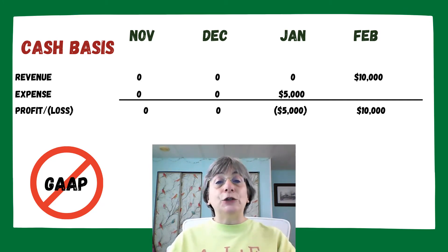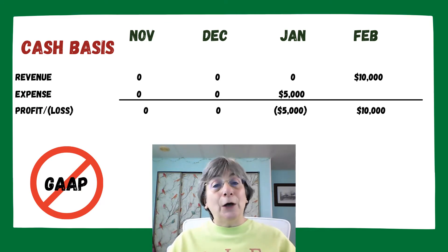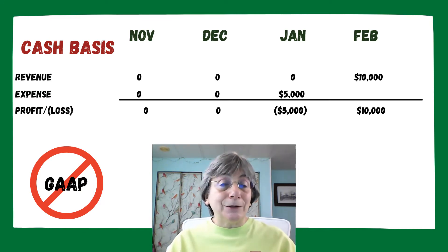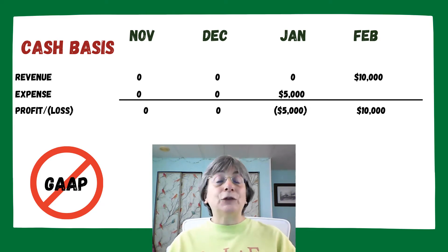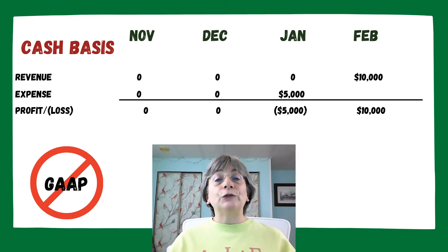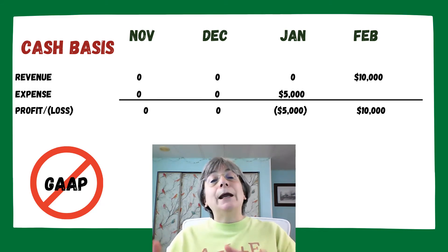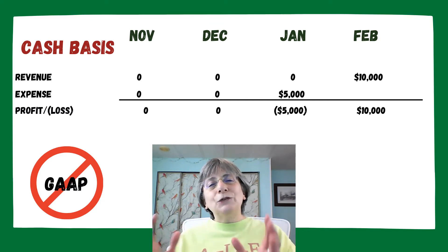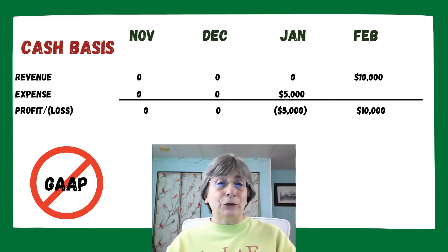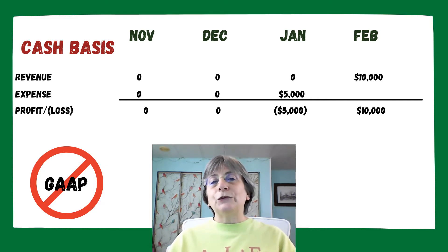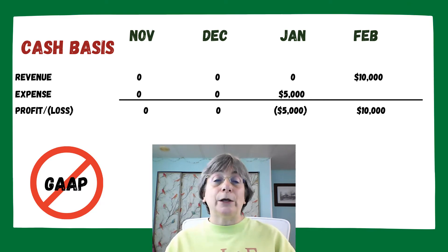Is that really accurate? Did we have a loss in January and a profit in February? Well, under GAAP, no we didn't. But under cash basis accounting, that's exactly what's going on. It's perfectly fine for a small business to use the cash method of accounting, but from an accounting perspective it's not necessarily the best way to go because it isn't matching up your revenue and your expenses. So you don't really know what the profitability of your business is — all you know is what your cash flow is.